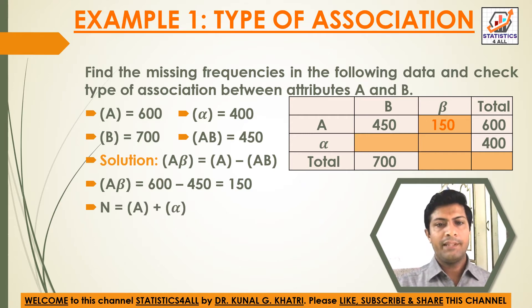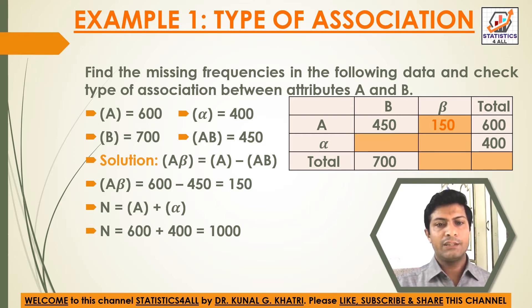Now capital N is equal to A plus Alpha. Here A is 600 and Alpha is 400, so capital N is equal to 600 plus 400, which equals 1000.